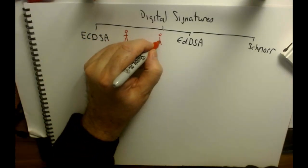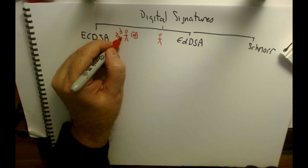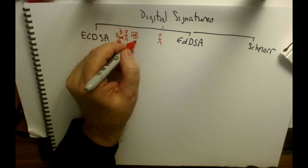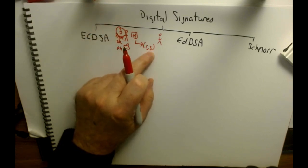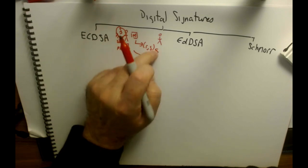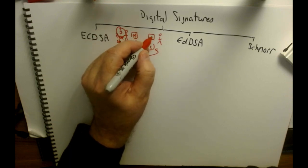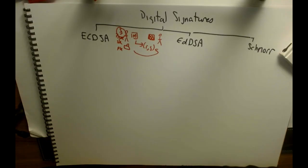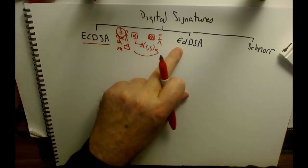In terms of understanding signatures, we have Bob and Alice and a message. Alice has a private key — we'll call it sk — and a public key pk. She uses her private key to produce a signature (r, s), and then Bob will use the message and Alice's public key to verify the signature.